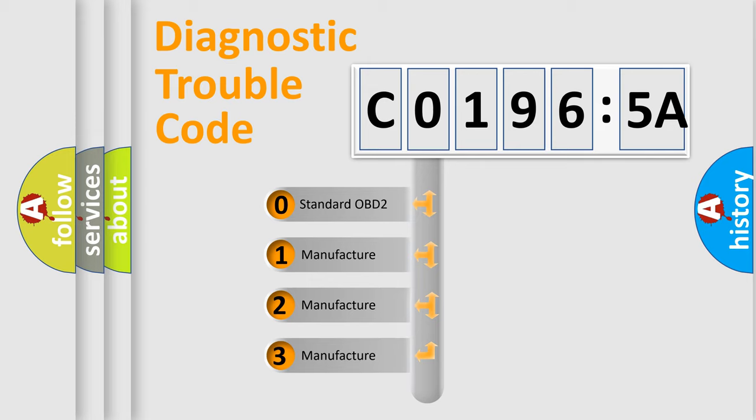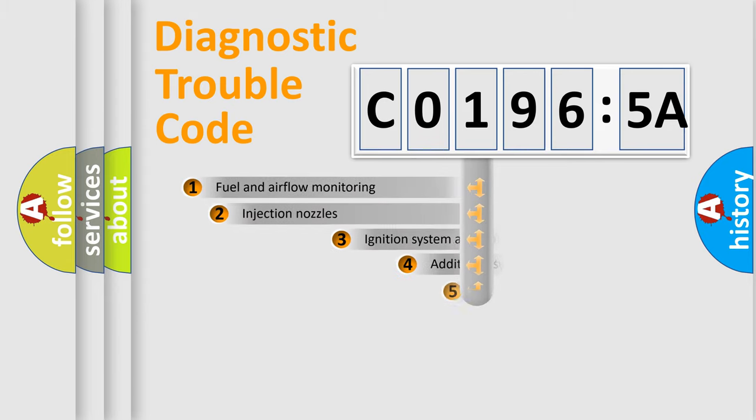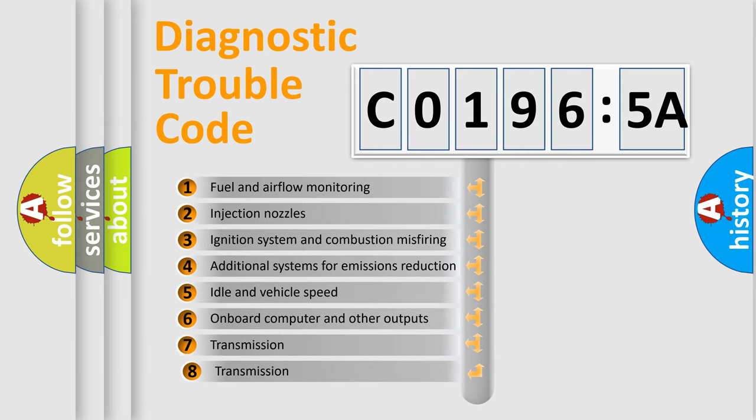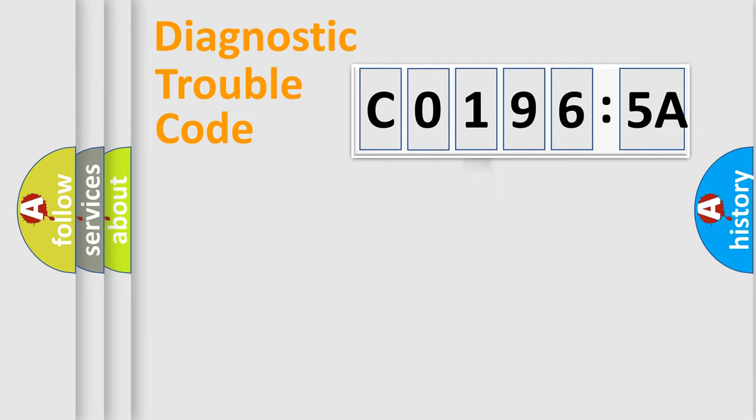If the second character is expressed as zero, it is a standardized error. In the case of numbers 1, 2, or 3, it is a more specific expression of the car-specific error. The third character specifies a subset of errors. The distribution shown is valid only for the standardized DTC code.